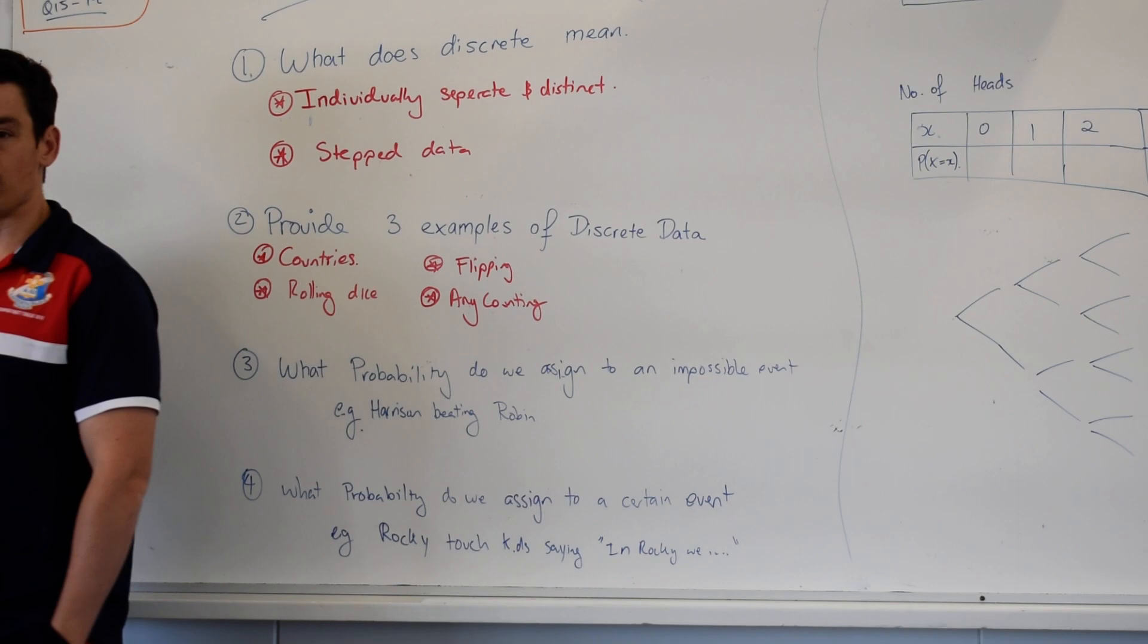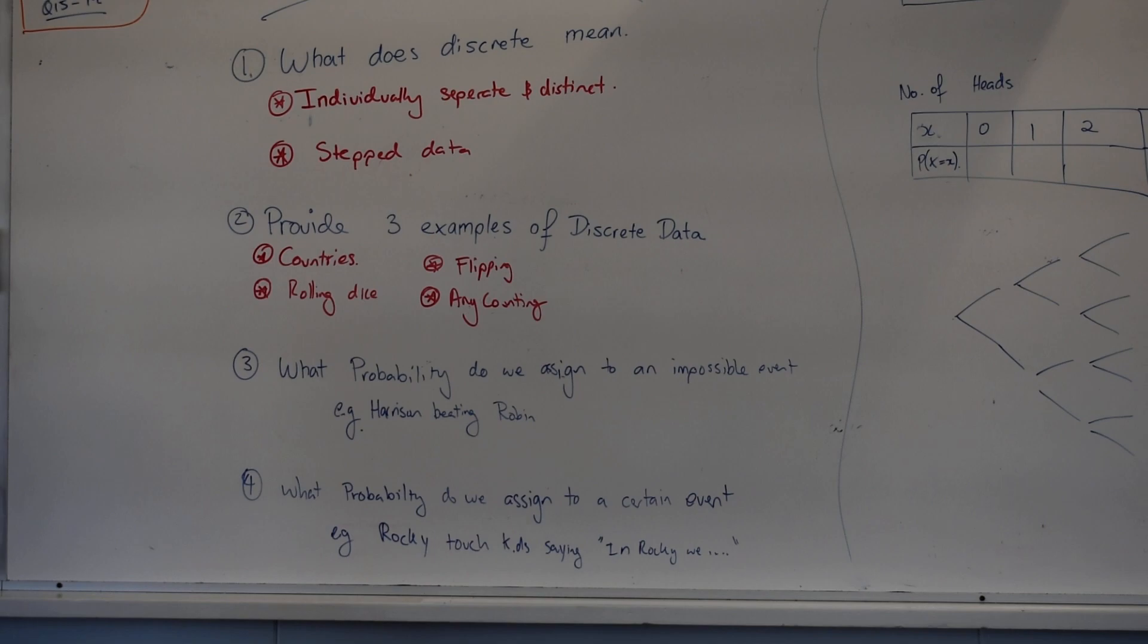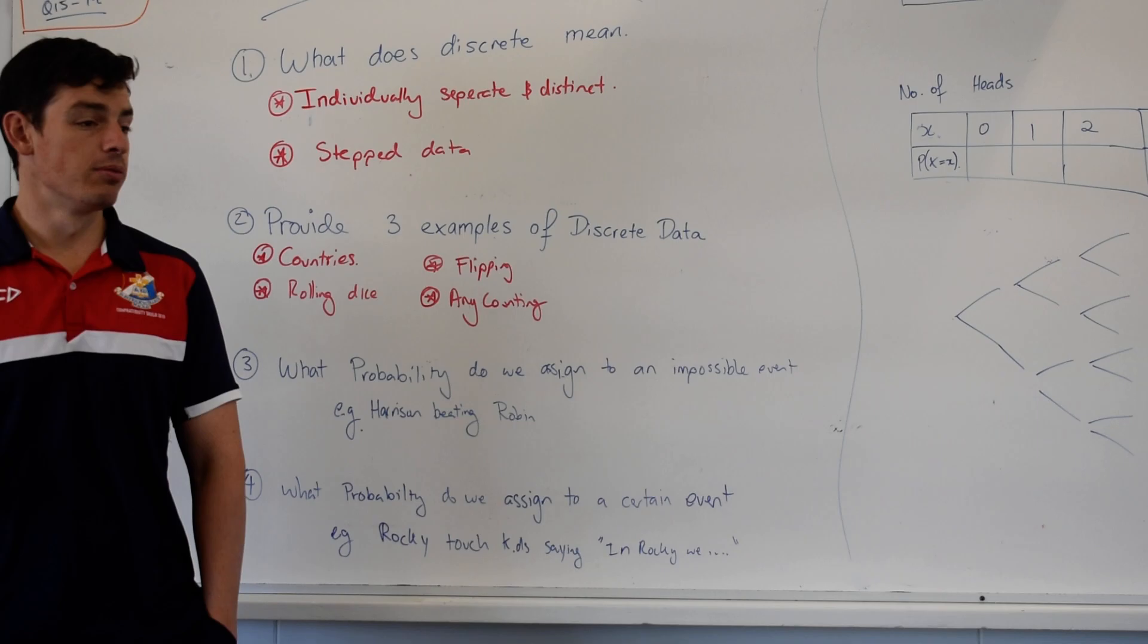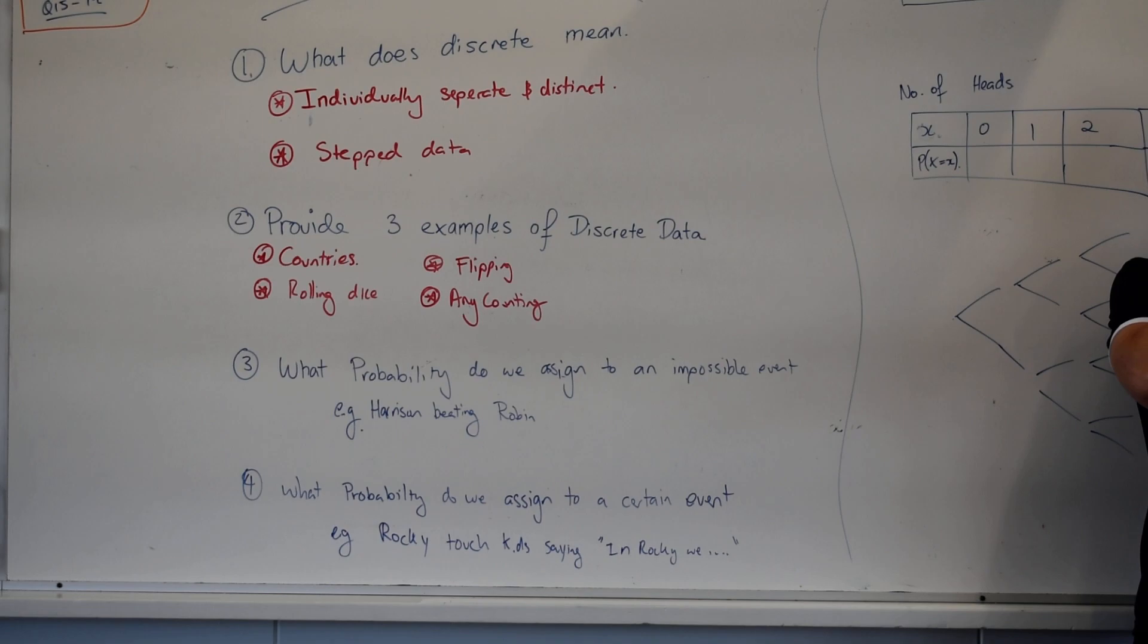Any counting, literally anything you count. Marbles. Marbles. Can you have, well you can have half a marble, but you get what I'm saying. You can't count half a marble. You can't count half a person. You're either a full person, or you're two full people, or you're three full people, or you're four full. You get the idea. Correct?